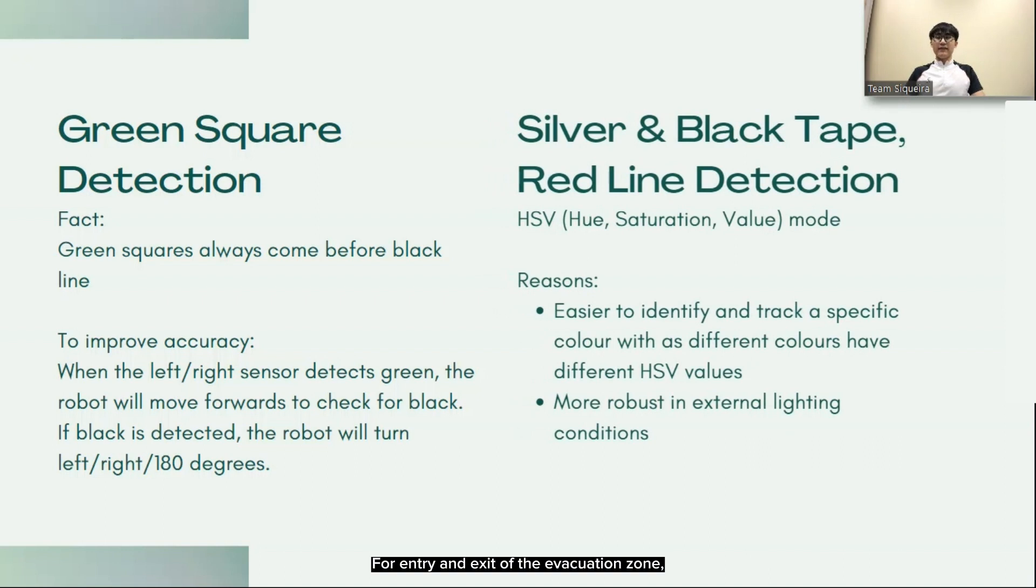For entry and exit of the evacuation zone, we also use HSV values to detect silver and black tape respectively. If the robot detects the black tape before it has completed the evacuation plan, it will return to the evacuation zone to continue its mission.